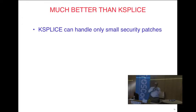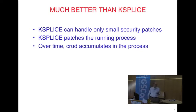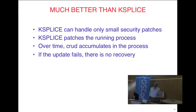Some of you may have heard of KSplice, done at MIT by one of my former students. They can update Linux in real time, but only for very small security patches — a couple of lines of code. They put in a branch at the problem, jump to new code, and branch back. They can't handle major data structure changes. Also, CRUD accumulates over time as patches pile up. If something goes wrong with the patch, there's no way to recover. In our case, if the check fails, we just kill off the new version and revert to the old one — no harm is done.